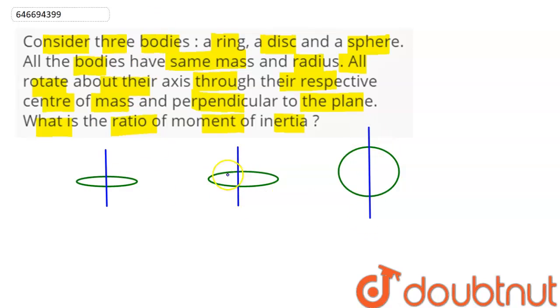So we can say here this is our disc. So this one is our ring here, this one is our disc here, and this one is our sphere here. Nothing is mentioned here, so we consider it to be a solid sphere.